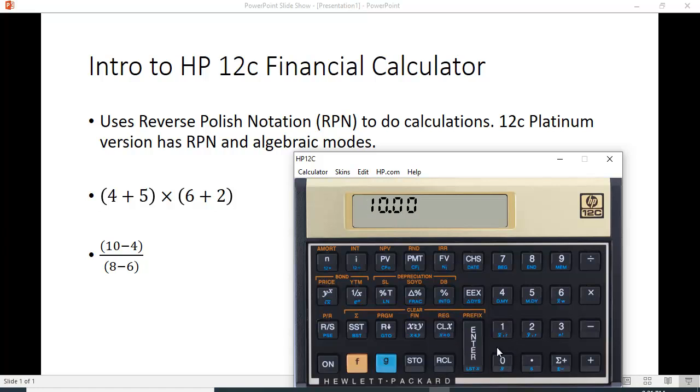10, enter, 4 minus. So we know that's 6. And then 8, enter, 6 minus. And then we can divide by that and we get essentially 6 divided by 2 and we get 3.